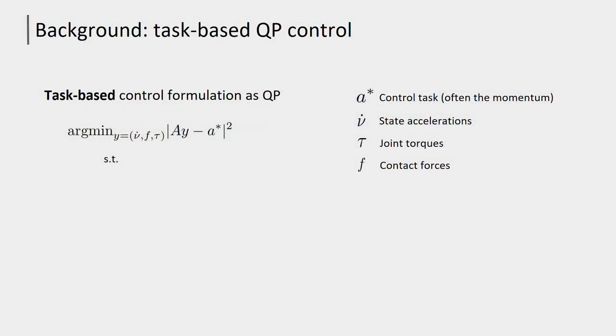Balancing controllers for humanoid robots are often formulated as quadratic programming problems. The problem usually consists in minimizing the square error norm of one or more control tasks, subject to a set of constraints on the system dynamics, kinematics and contact stability. The control task is often the stabilization of the robot momentum.